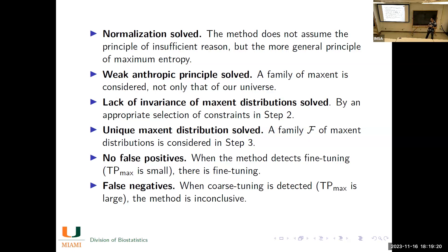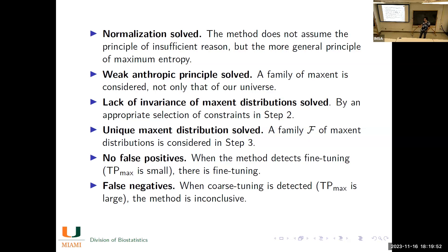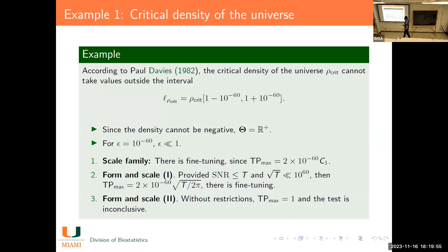This criteria is good in the sense of not allowing false positives — whenever the tuning probability is small, the real distribution is also giving small probability. But it does not do well in terms of false negatives: when the tuning probability is large, we don't know what the real probability is. The criteria is good for avoiding Type I errors but not for avoiding Type II errors.